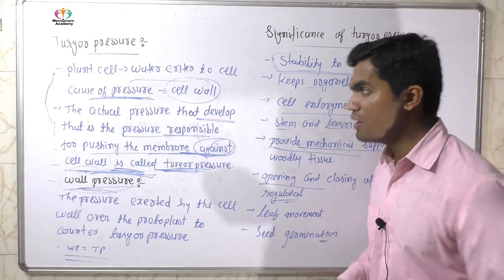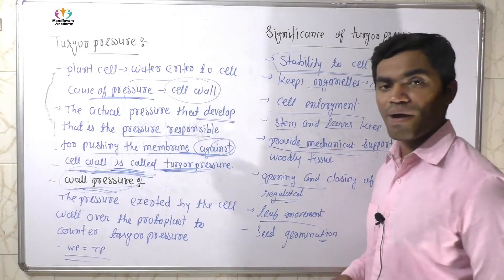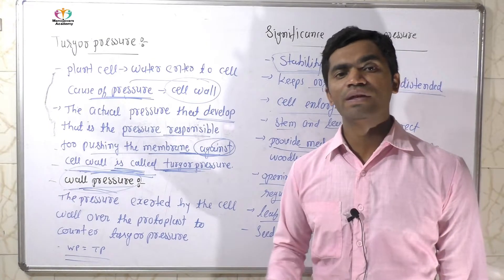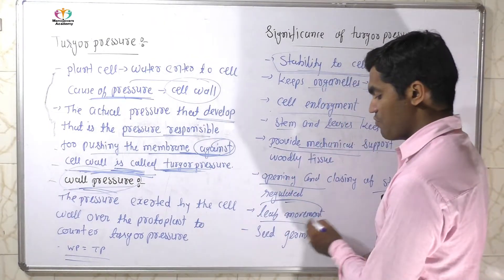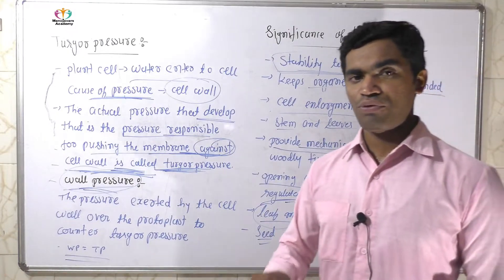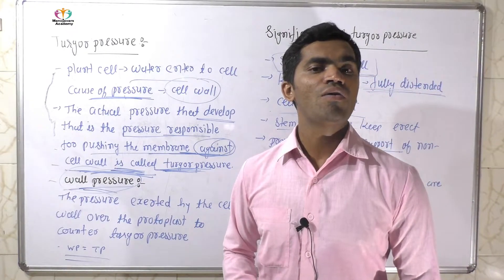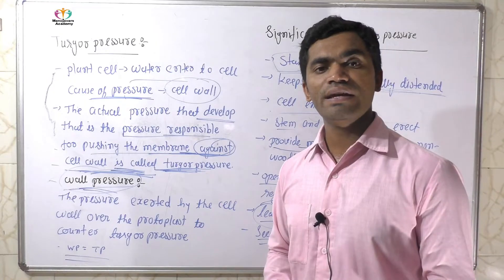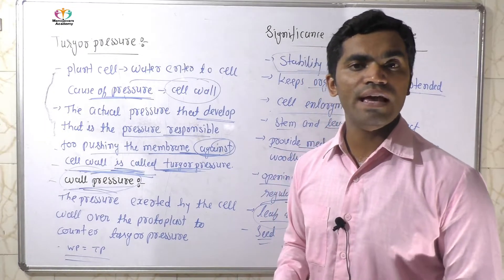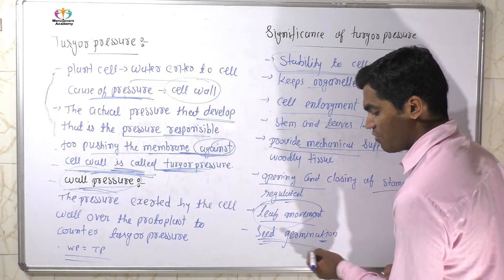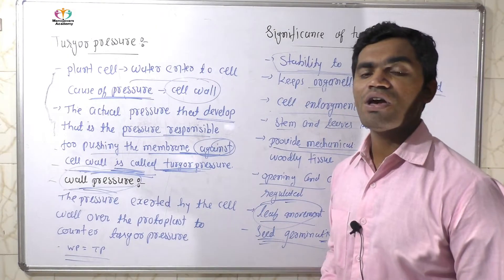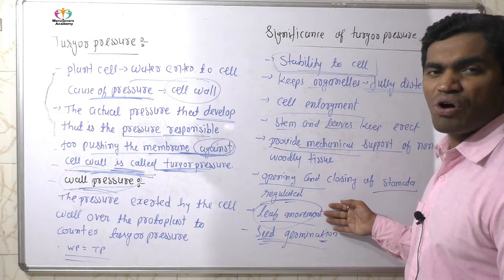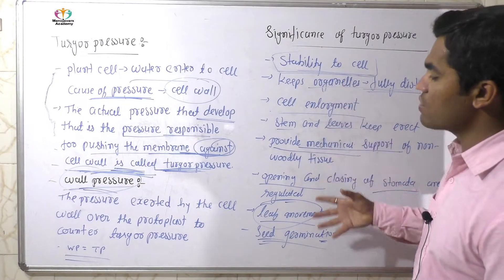The regulation of stomata is based on turgor pressure. Leaf movement — water is very important for the character of thick monastic plants, and leaf movement is dependent on it. When a seed is put in soil, the seed germination occurs — the seed absorbs water, feels pressure, and the seed coat bursts, allowing the seedling to emerge. This germination is also an important significance of turgor pressure.